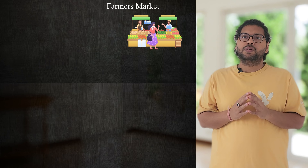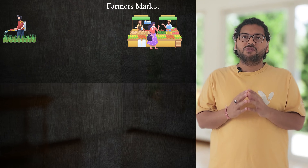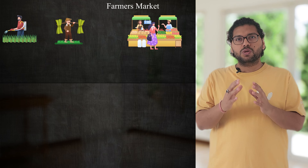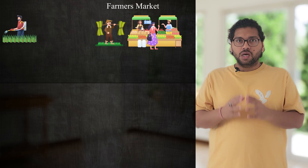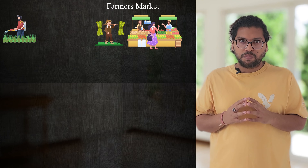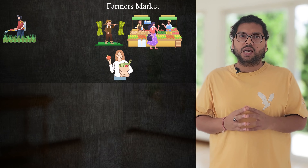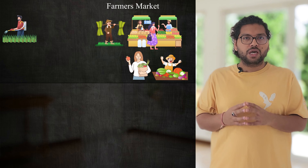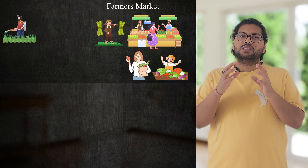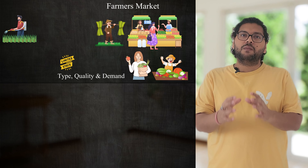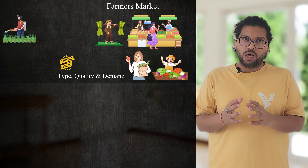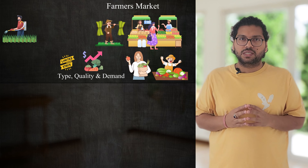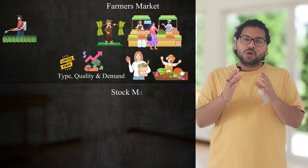Let's understand what the stock market is with an example of a regular market. There are farmers who grow vegetables and bring some portion of their produce to sell in that market. Farmers offer a marginal selling price, and people who want to consume those vegetables can buy them directly, or middlemen can buy them and resell at a higher profit. As the quantity in the market is limited, depending on demand and quality, the price of vegetables keeps changing.